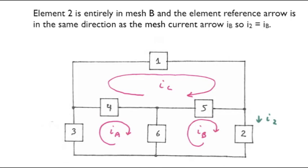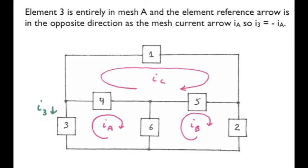Element 2 is entirely in mesh B, and the element reference arrow is in the same direction as the mesh current reference arrow, so I2 is equal to IB. Element 3 is entirely in mesh A, but the element reference arrow is in the opposite direction as the mesh current arrow. So I sub 3 is equal to minus I sub A.